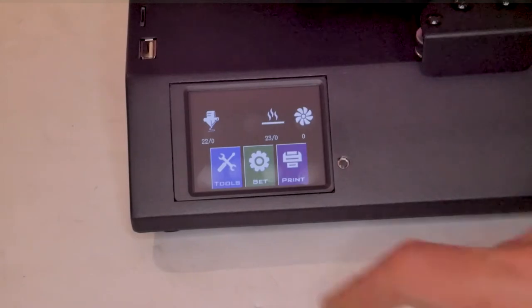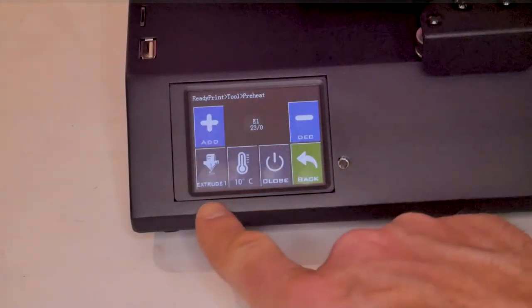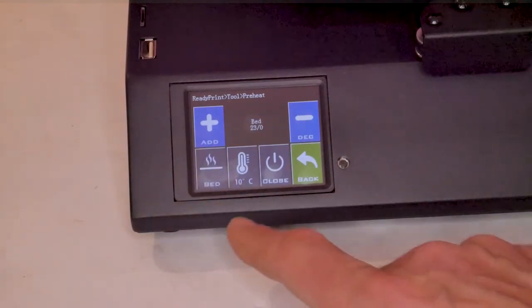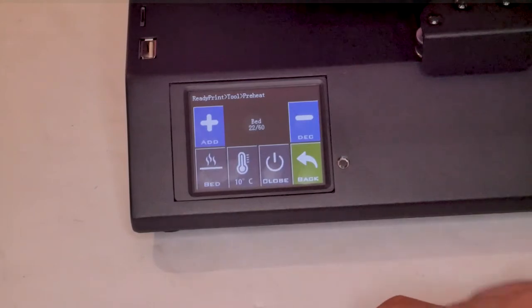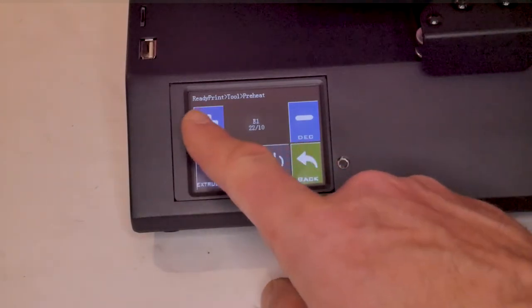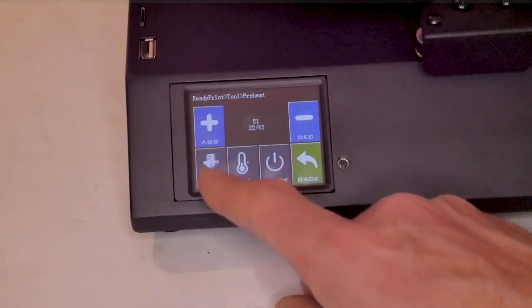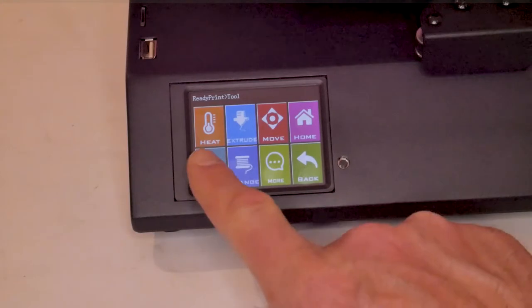Before we can start printing we still need to level the print bed and to do that of course we need to turn the machine on. Once the machine is on you can head into the menu and we're going to preheat the print bed. To do this go into the tools section, select heat, and this part here was not very intuitive to me at first because I did not see anything about the bed. So you have to actually press on the extruder to toggle between the bed and extruder heat settings. Pressing the little thermometer icon will toggle between the increments of which you want to increase or decrease the temperature. As I mentioned at the beginning, the heated bed is an AC powered bed so it will heat up very quickly. The manual also suggests heating the nozzle up for the bed leveling process but from my experience I find that this is less critical than the print bed.